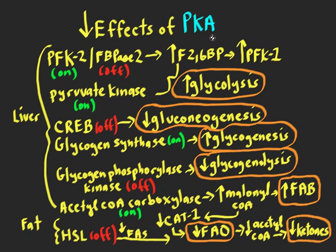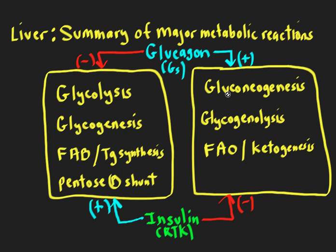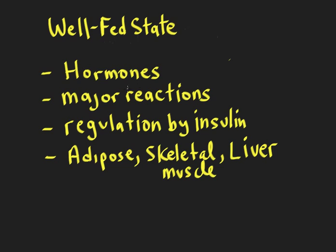All these effects of decreased PKA and high insulin result in turning on hepatic glycolysis, glycogenesis, fatty acid and triglyceride synthesis, and the pentose phosphate shunt, while turning off gluconeogenesis, glycogenolysis, fatty acid oxidation, and ketogenesis. To summarize the well-fed state: insulin is high, glucagon is low; insulin induces key enzymes and promotes energy storage across the liver, fat cells, and skeletal muscle, ultimately reducing plasma glucose. That concludes this lecture on the well-fed state.